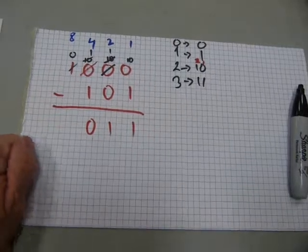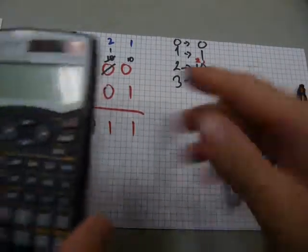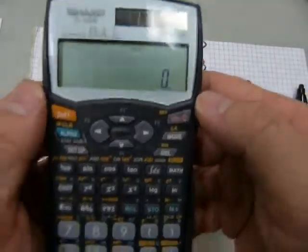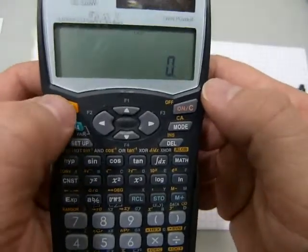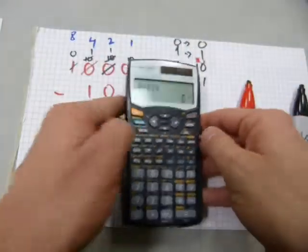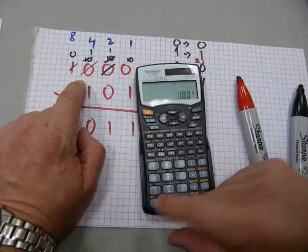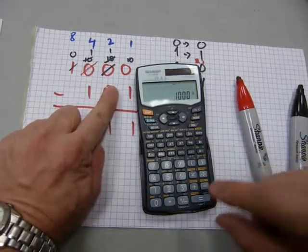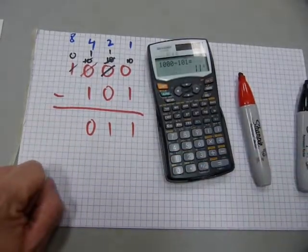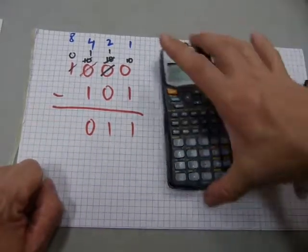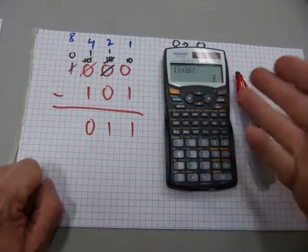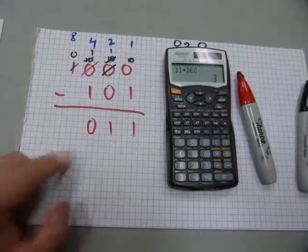Let's check it on a calculator. The calculator is set to binary mode — you press second function, then binary. Enter 1000 minus 101, which equals 11. If you want to know the decimal equivalent, press second function, decimal — the answer is three.